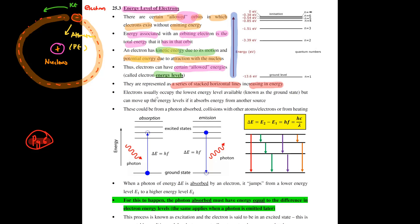Electrons tend to occupy the lowest energy level available, which is known as your ground state, but they can move up the energy levels if they absorb energy from another source.